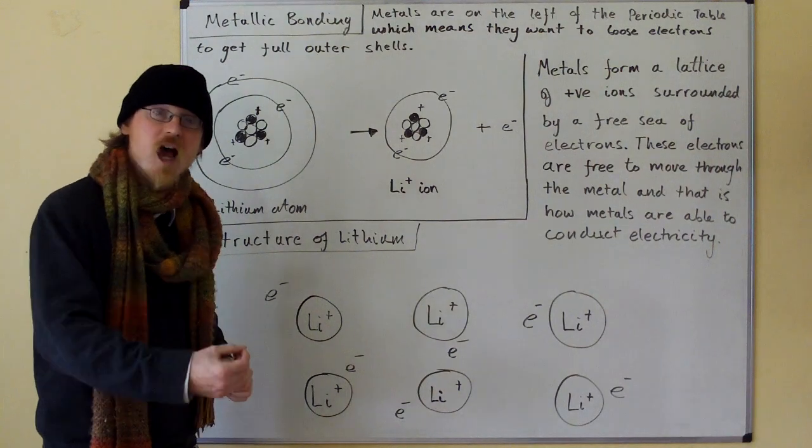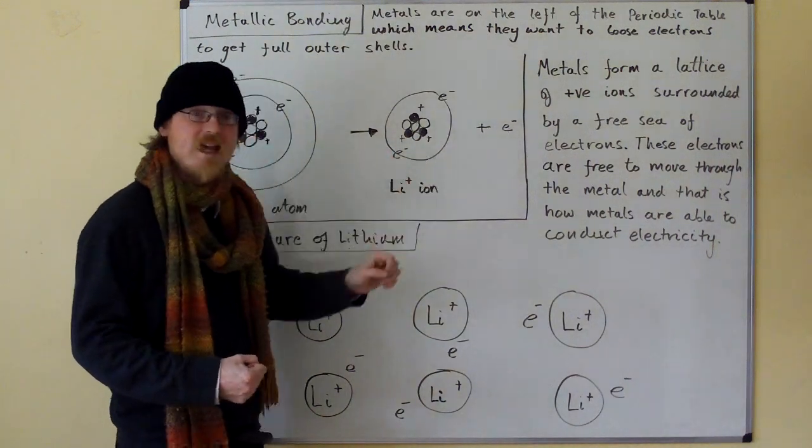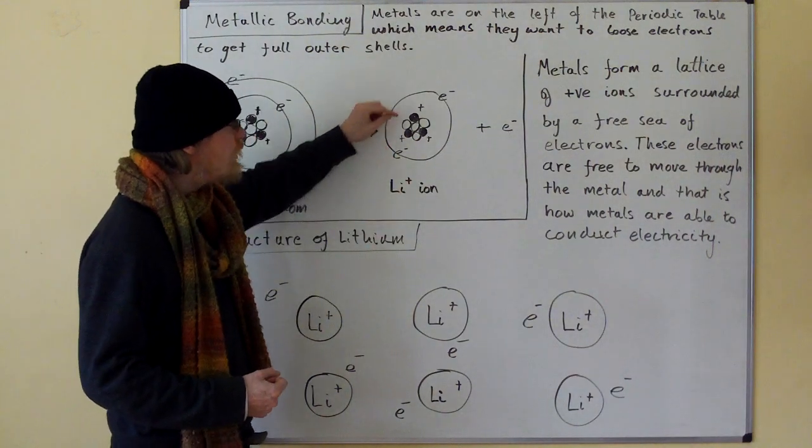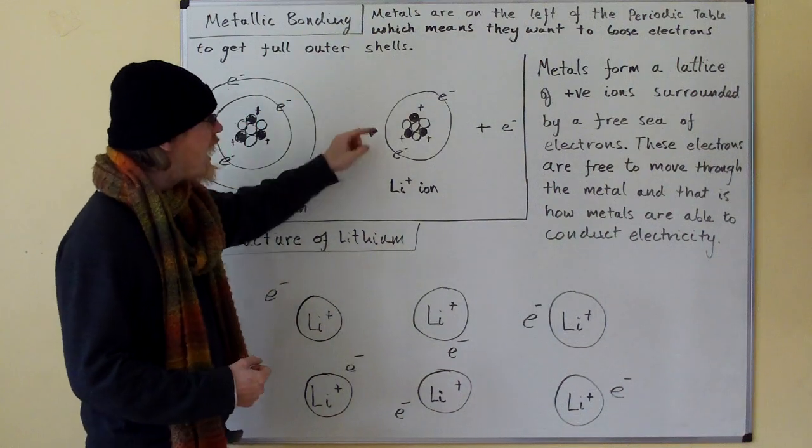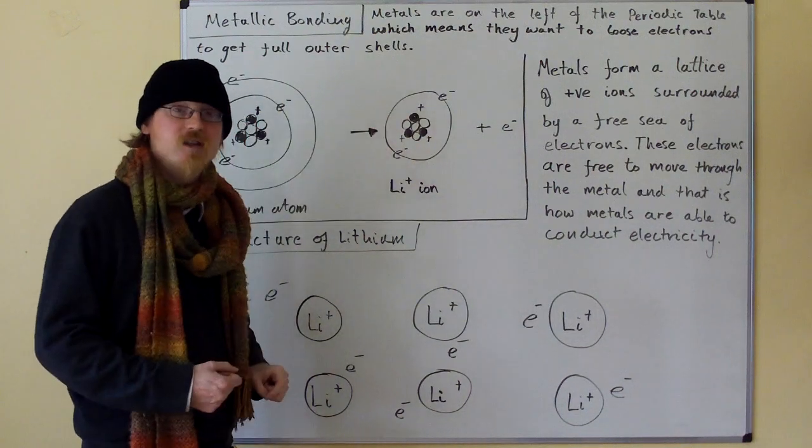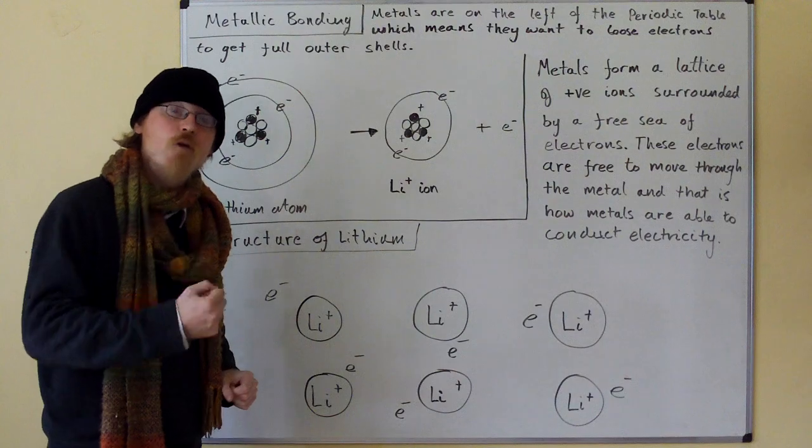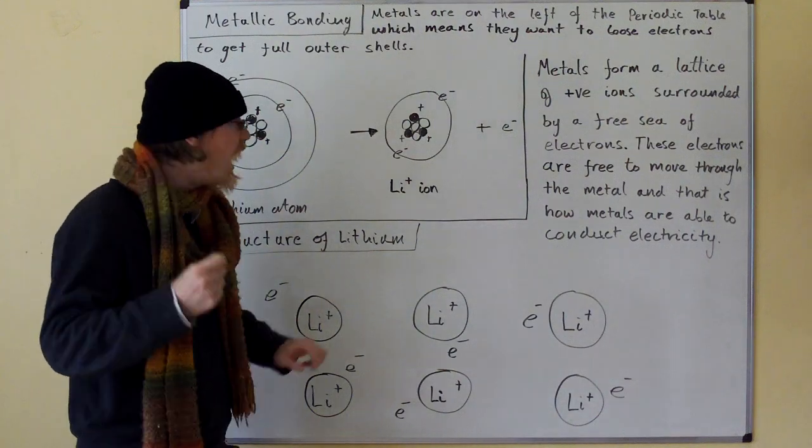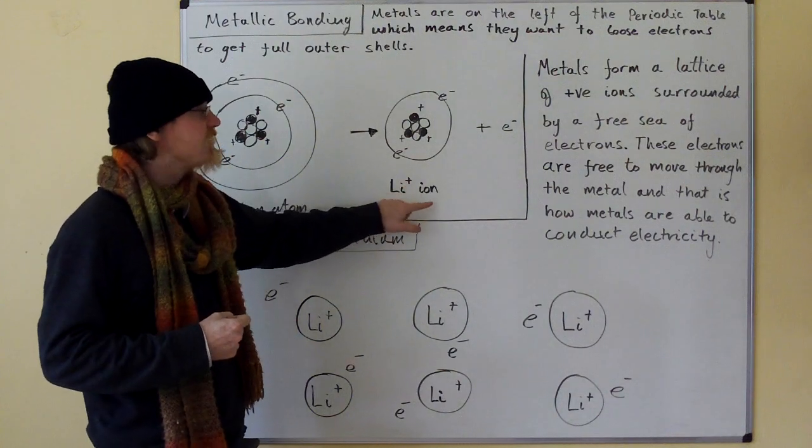Why is it an ion? Because it's got a charge now. If it loses one negative charge, it's left with two negative charges for the electrons and three positive charges in the nucleus, which gives it an overall charge of plus one. So it's a lithium plus ion.